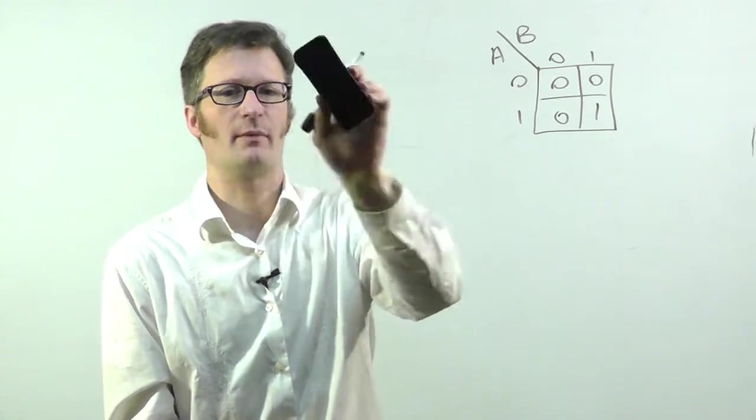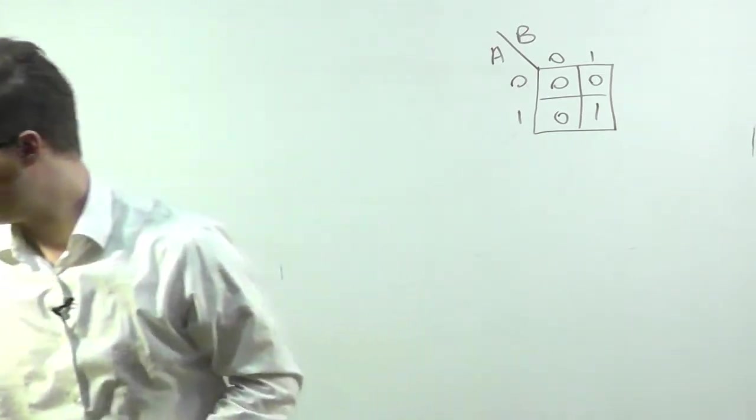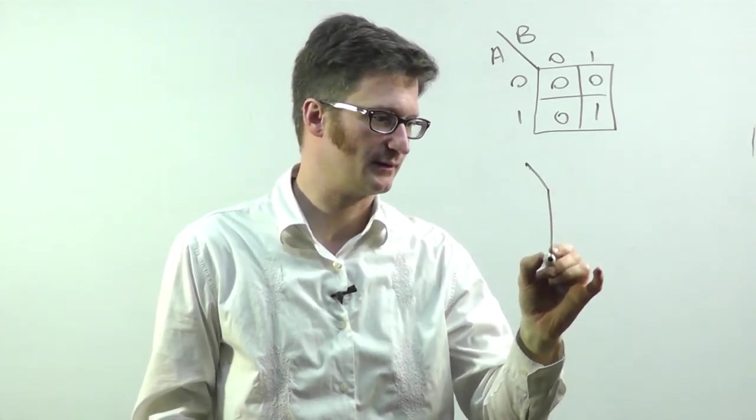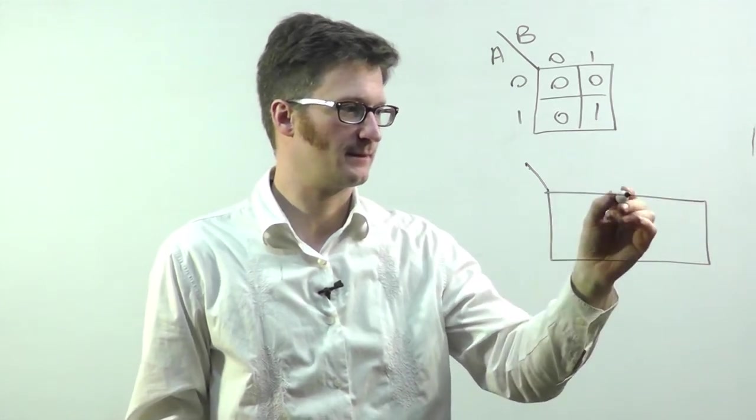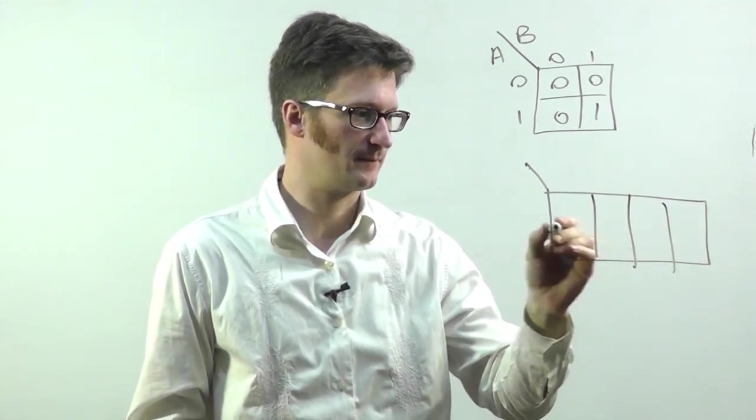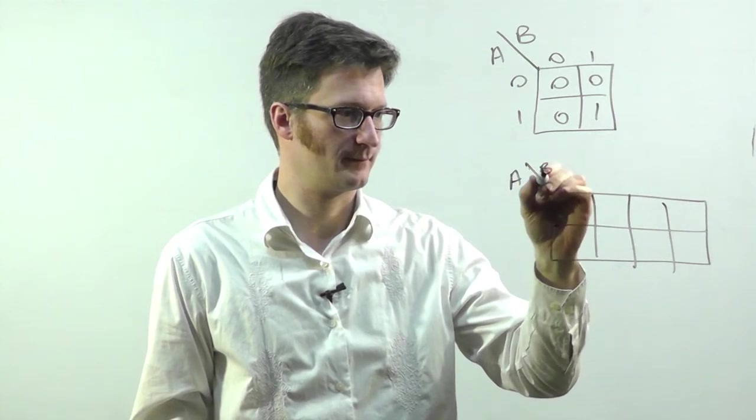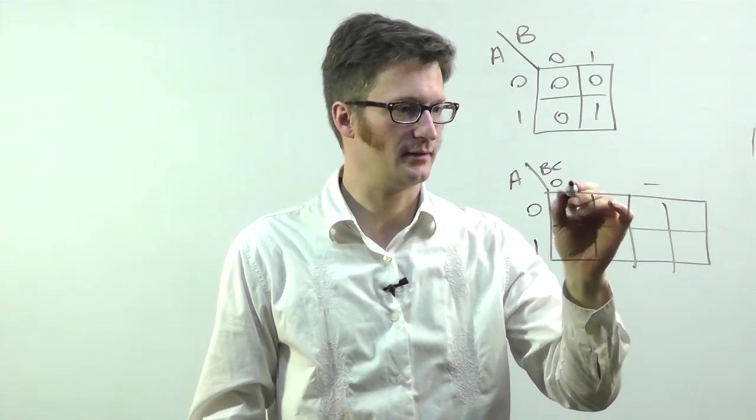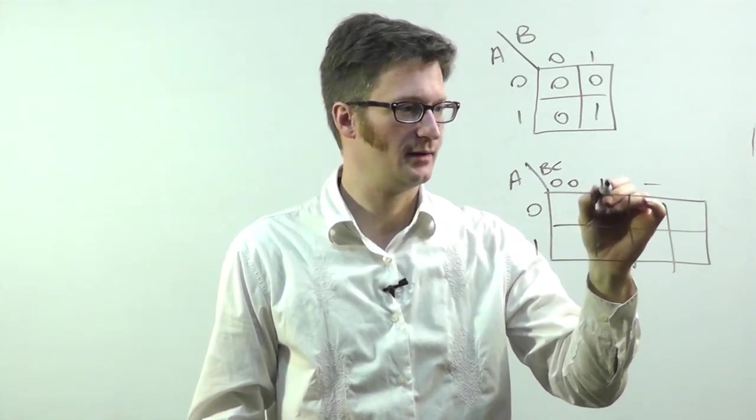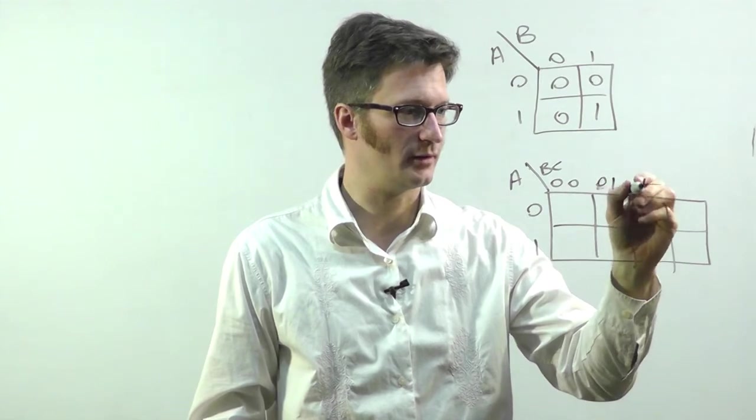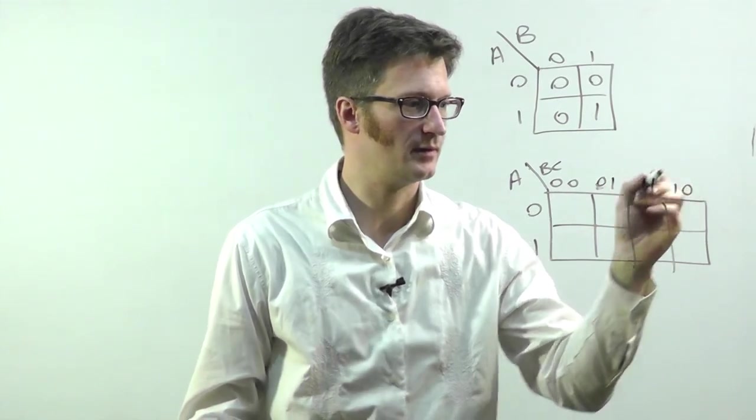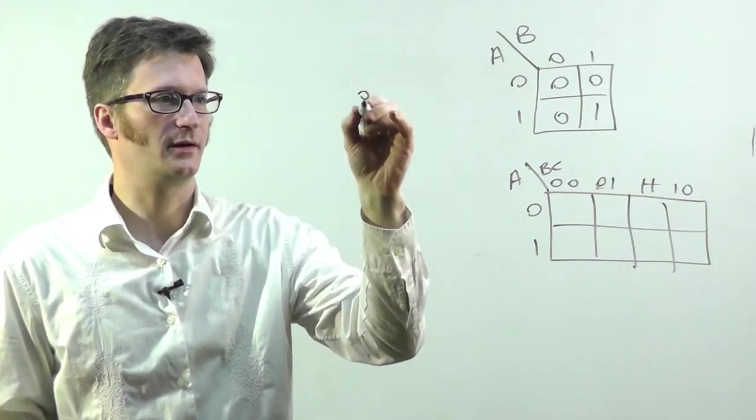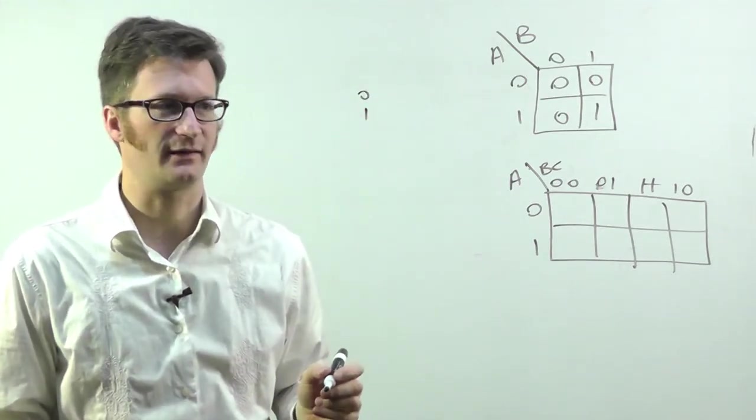You're never really going to use a Karnaugh map for two variables. If you were to do three variables, you might have it like this. And for how you number it, it is in gray code. To give you a quick refresher on gray code, a one bit gray code is like that, zero, one.